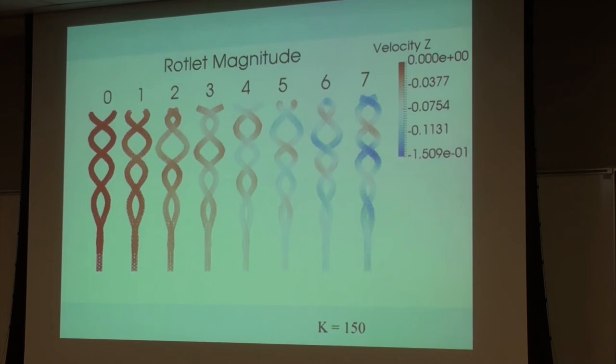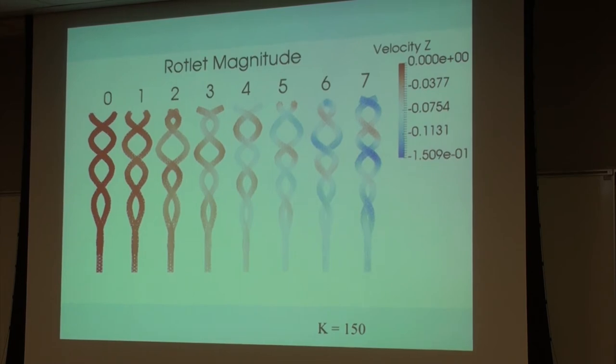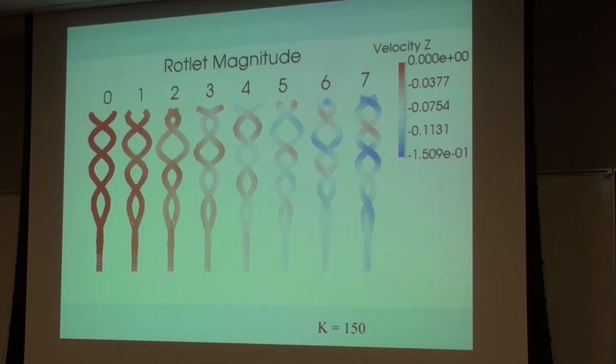For the case of the rotlet strength of seven, you see that the wave number has increased, and the amplitude is smaller. The thing that you're varying is the strength of the torque that I'm applying at its nose. But then I also apply the opposite torque a little further out. So, here you can see the elastohydrodynamic coupling.